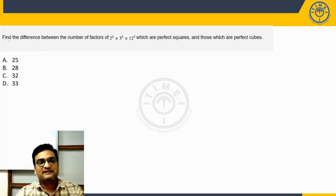Let us get started here. So it says find the difference between the number of factors of this number. So I will just write down this number, let us call this as n.